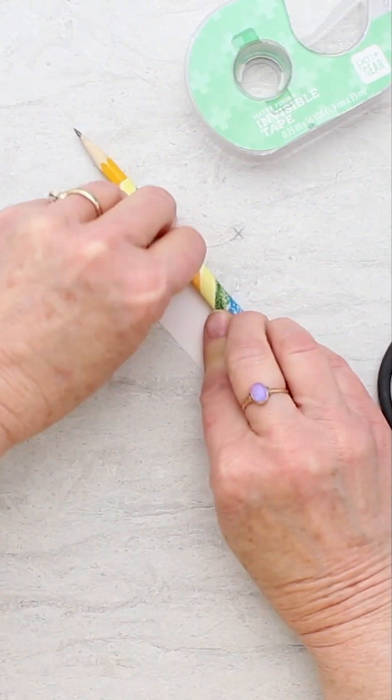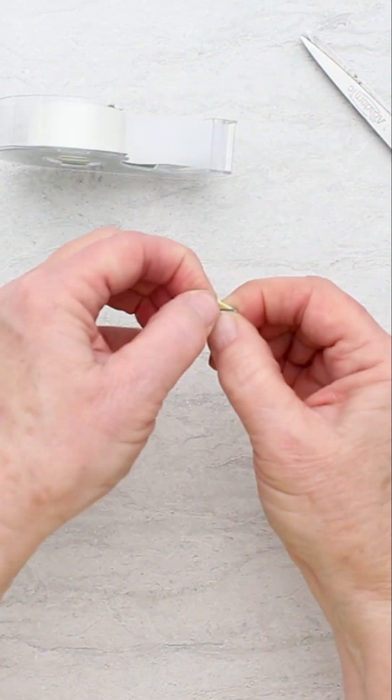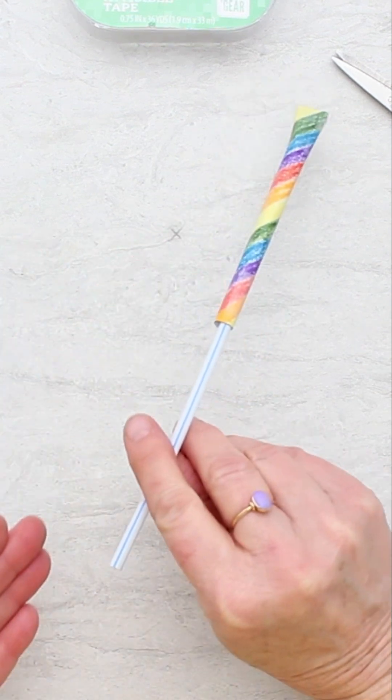So this is rocket number one. Take the rectangle, roll it around the pencil, tape this end, and it's going to go onto a straw, and then you blow.